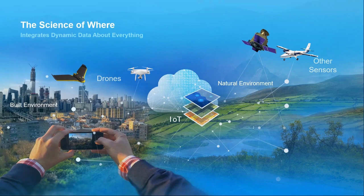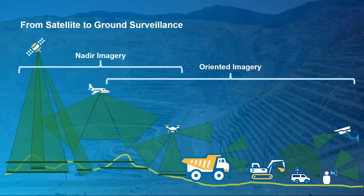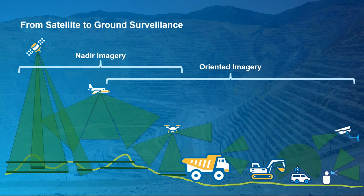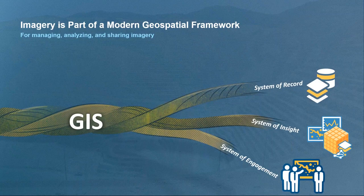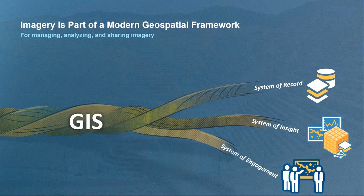Imagery and remotely sensed data, such as that from drones, is increasingly becoming part of this reality. We're now capturing remotely sensed data from an enormous array of sources — from satellites capturing InSAR data for monitoring tailing dams, to trucks and humans on the ground capturing LiDAR data and pictures for mapping open pit mines. This represents challenges: managing large amounts of data, performing analysis at scale, and sharing data with everybody who needs access. GIS provides a modern framework for managing geospatial information, including imagery, solving those challenges through a system of record, a system of insight, and a system of engagement.